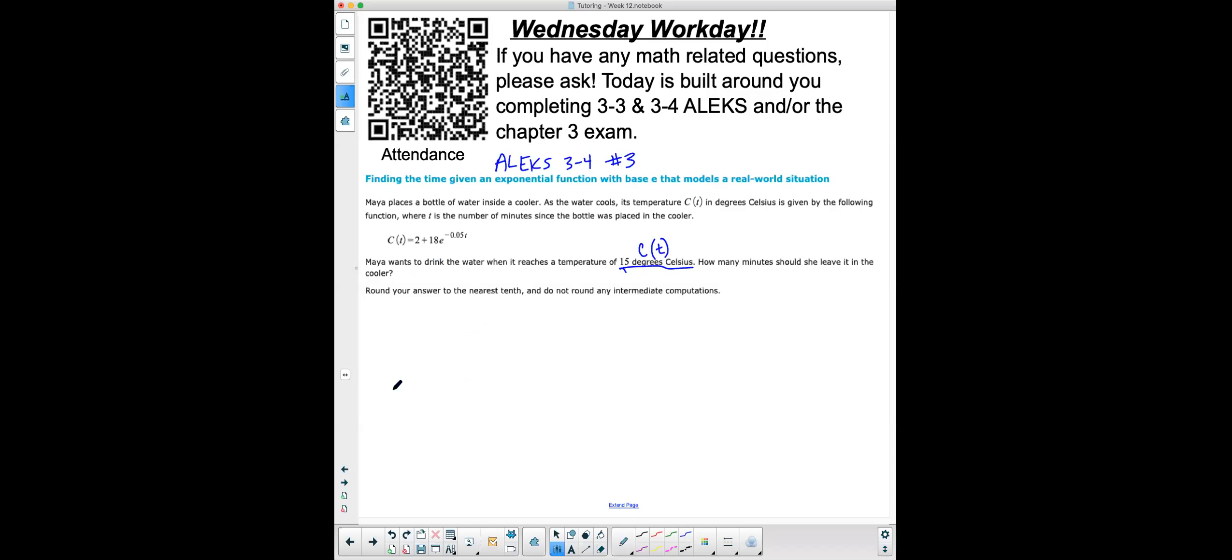If you're going to solve this by algebra, what you would do is you would just substitute in 15 for C of T. So you'd have 15 equals 2 plus 18e to the negative 0.05t, and we would solve this.